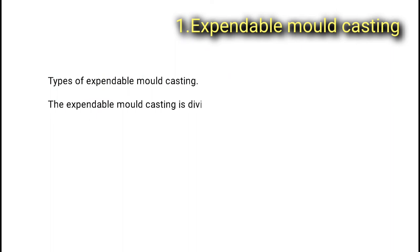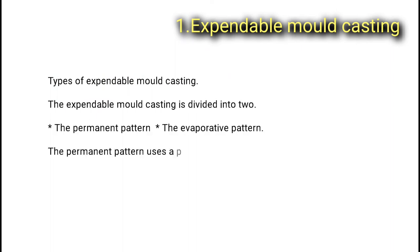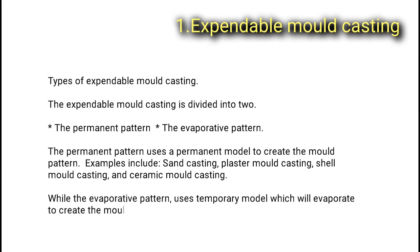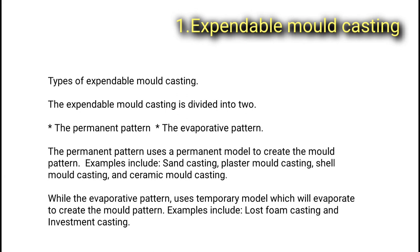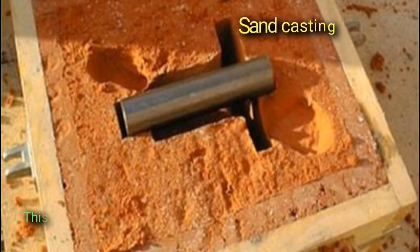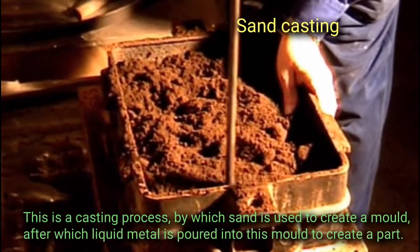The expendable mold casting is divided into two: the permanent pattern and the evaporative pattern. The permanent pattern uses a permanent model to create the mold pattern — examples include sand casting, plaster mold casting, shell mold casting, and ceramic mold casting. The evaporative pattern uses a temporary model which will evaporate to create the mold pattern — examples include lost foam casting and investment casting.